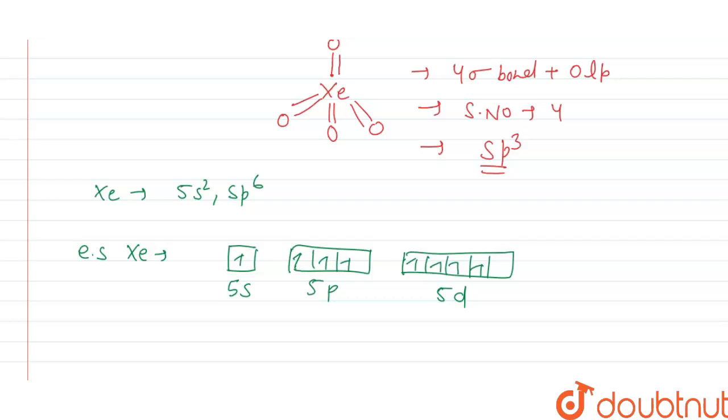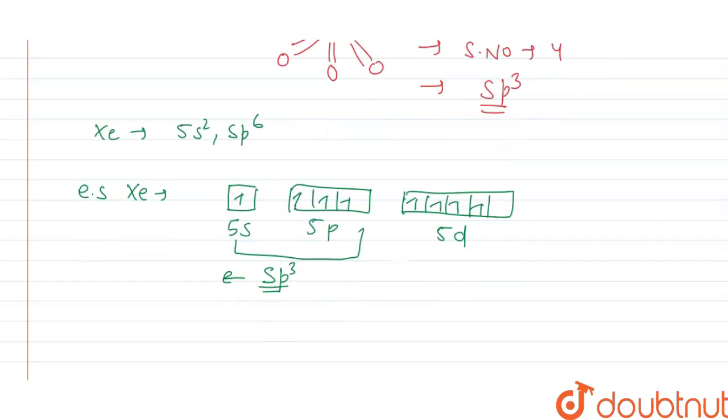As we see, xenon in XeO4 has sp3 hybridization, which means 1s and 3p orbitals undergo sp3 hybridization to make 4 sigma bonds with oxygen atoms.